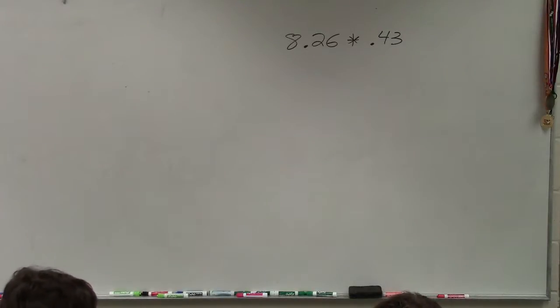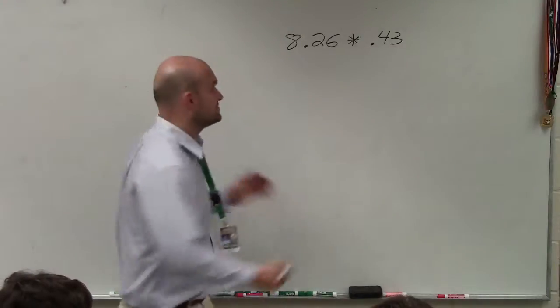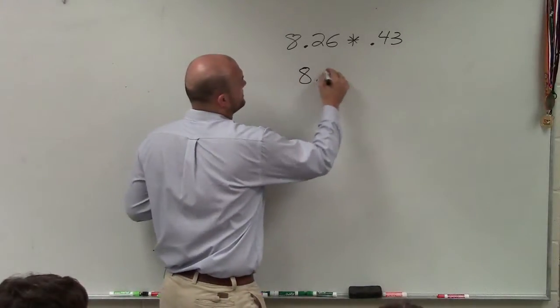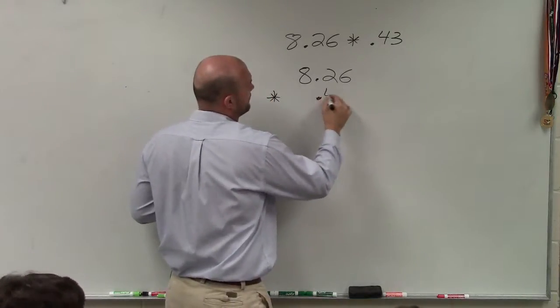When you're multiplying decimals, just like adding and subtracting, we want to align them vertically and align the decimals. 8.26 times 0.43.